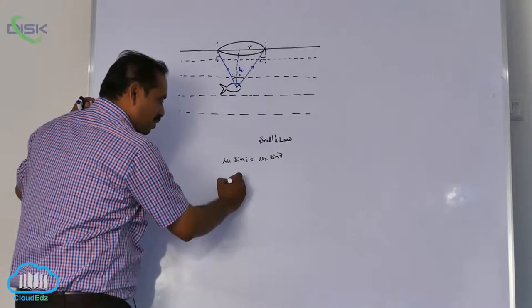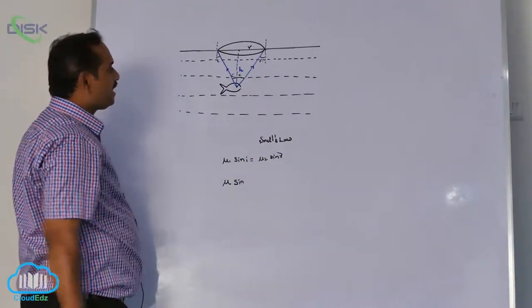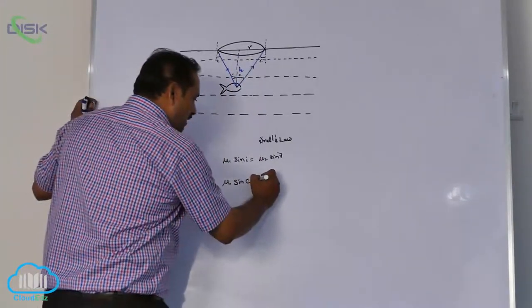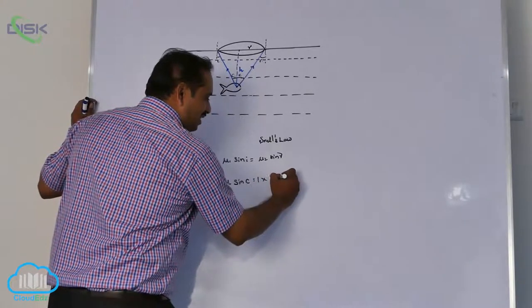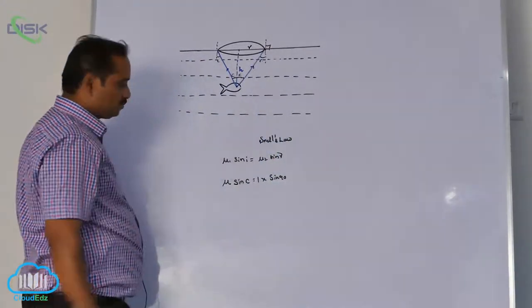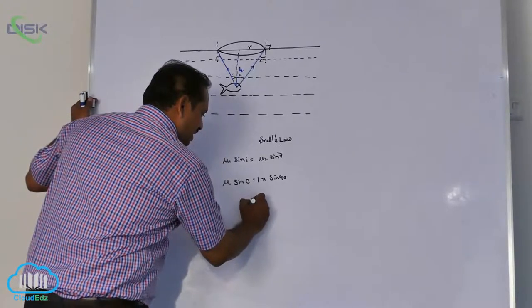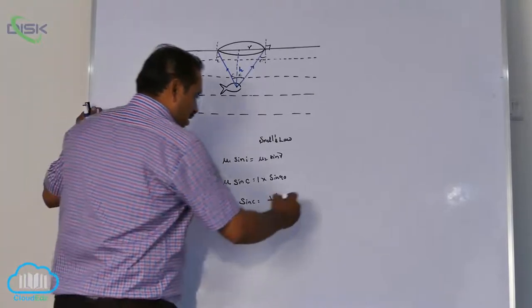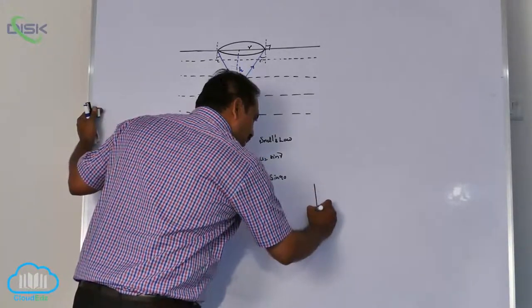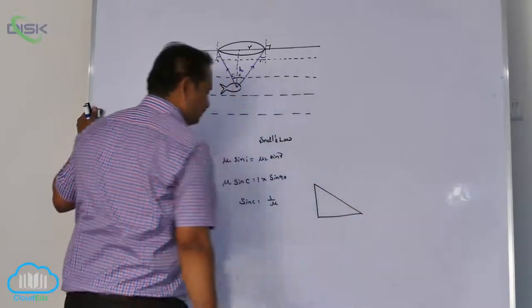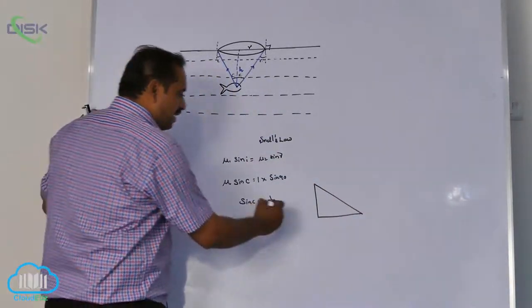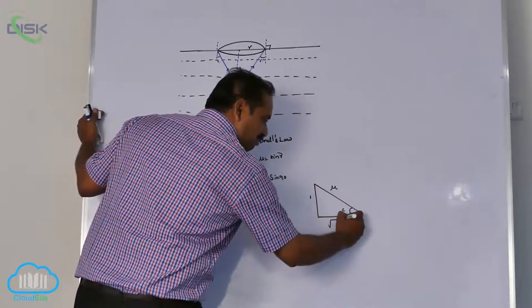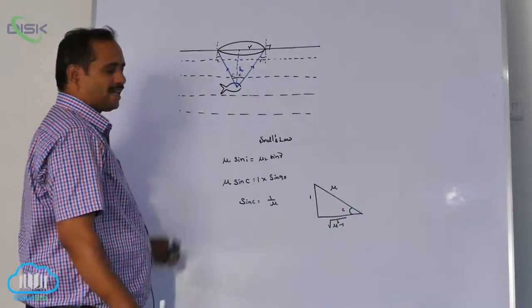That is mu into sin I, nothing but sin C, equal to 1 into sin 90, because refracting angle is 90 degrees. Sin C equal to 1 by mu.